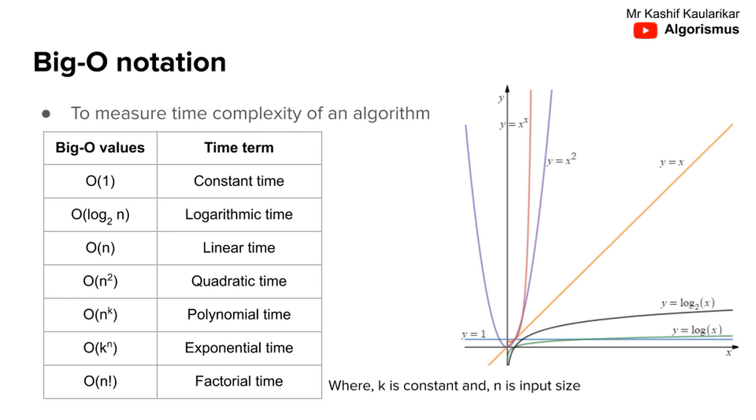Common values for Big O notation are constant time, log time, linear time, quadratic time, polynomial time, and exponential time. In these notations, k is a constant and n indicates the input size.